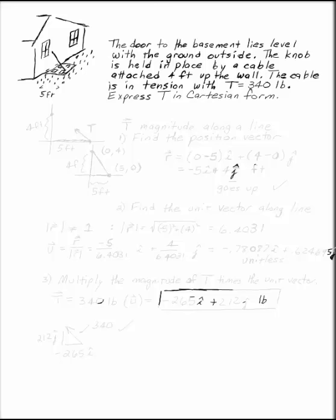First, let's draw a picture. Here's the wall and the ground with the door on it. The door is five feet wide. The cable is attached four feet up the side of the house. The tension goes from the door to the wall. The tension is pulling on the door, otherwise the door would fall into the basement. So here is our vector.